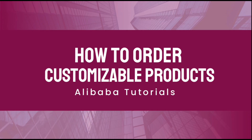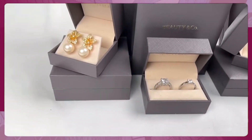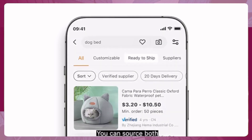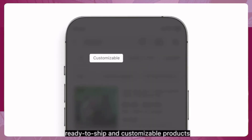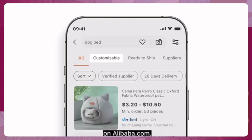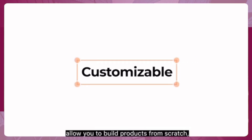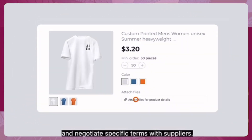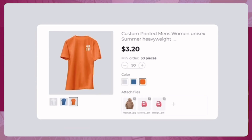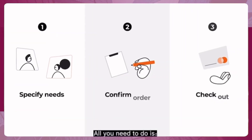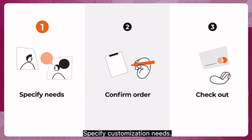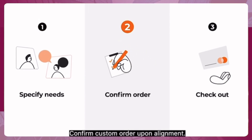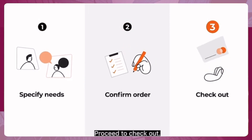You can source both ready-to-ship and customizable products on Alibaba.com. Customizable options allow you to build products from scratch, add logos, and negotiate specific terms with suppliers. All you need to do is specify your customization needs, confirm the custom order upon alignment, and proceed to checkout.